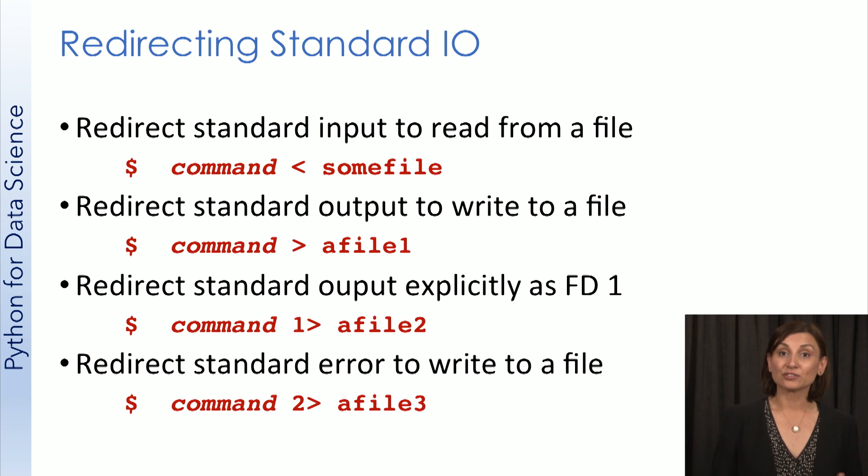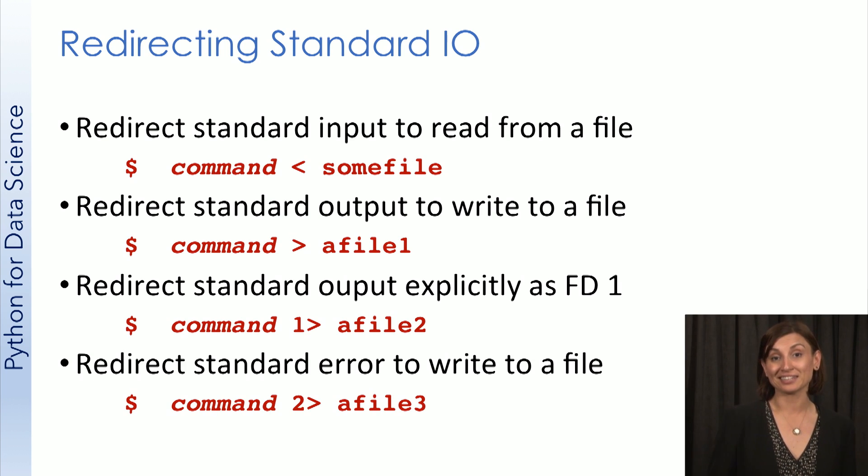However, to redirect standard error, we need to use fd2 with the greater than operator, which is written as two greater than. Here we see both standard out and standard error redirected using command to greater than a file four and greater than a file five. So that means we redirect standard error to a file four and standard out to a file five.